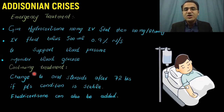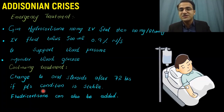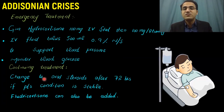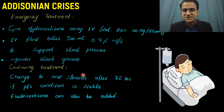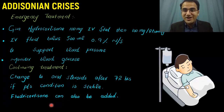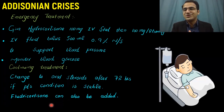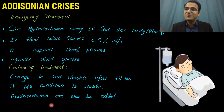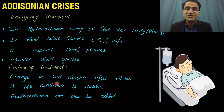For continuing treatment, you transition the patient to oral steroids after 72 hours if their condition is stable, and the patient can potentially be sent home. Fludrocortisone can also be added — it is a steroid that acts like aldosterone, causing salt and water retention. Fludrocortisone replaces the function of aldosterone, while oral steroids make up for the loss of cortisol.